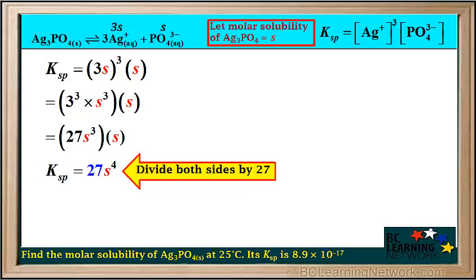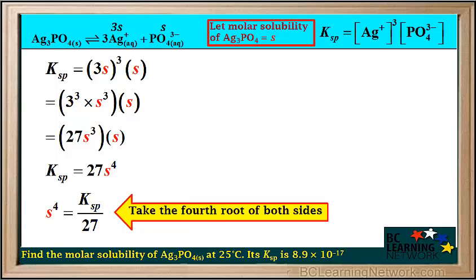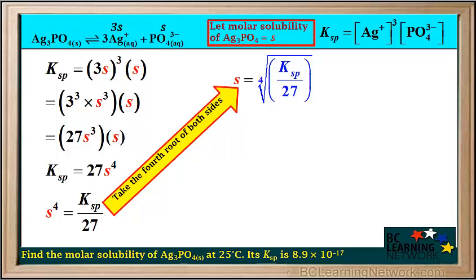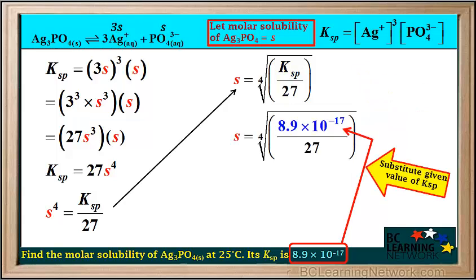Now we divide both sides by 27 in order to isolate s to the fourth, so s to the fourth equals Ksp over 27. In order to solve for s, we take the fourth root of both sides of the equation, giving us s equals the fourth root of Ksp over 27. Now we can substitute the given value of Ksp, 8.9 times 10 to the negative 17th, in for Ksp in the equation.